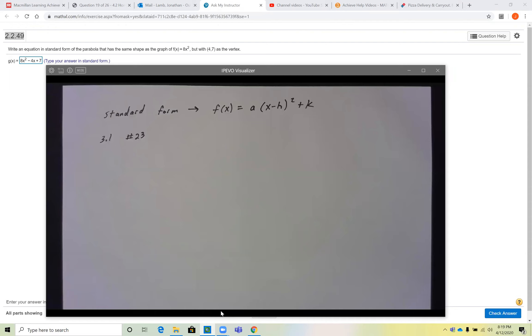It's asking you how to write an equation in standard form of the parabola that has the same shape as f(x) = 8x², but you're told that (4, 7) has to be the vertex.